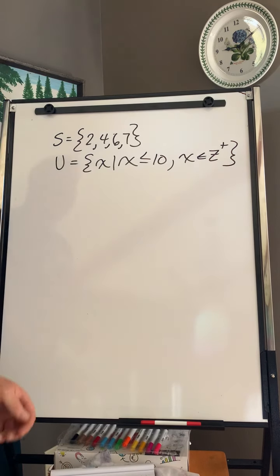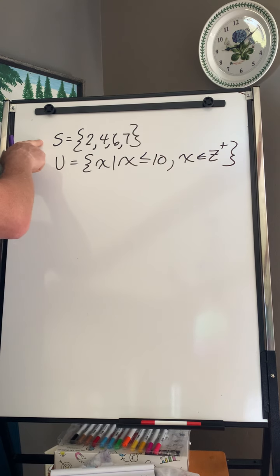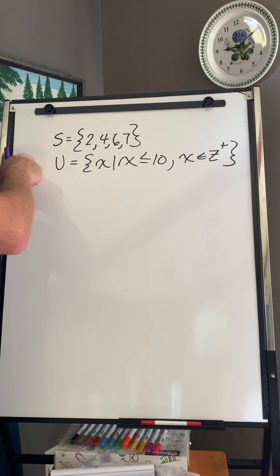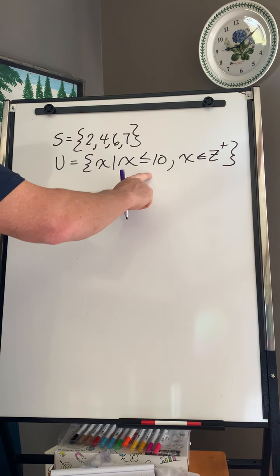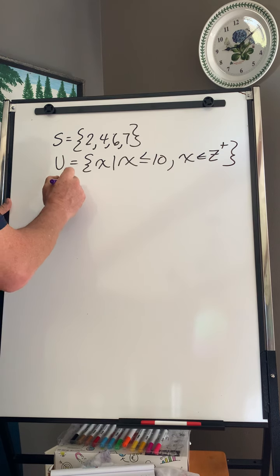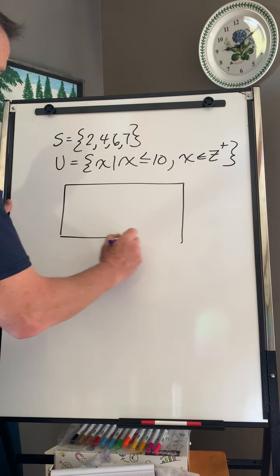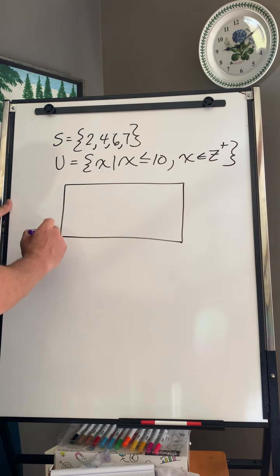So in this case, we're going to draw it. This is the example, we've got the set S, the universal set, are all integers less than or equal to 10. First step, my rectangle, have to have my rectangle because it's my universal set.